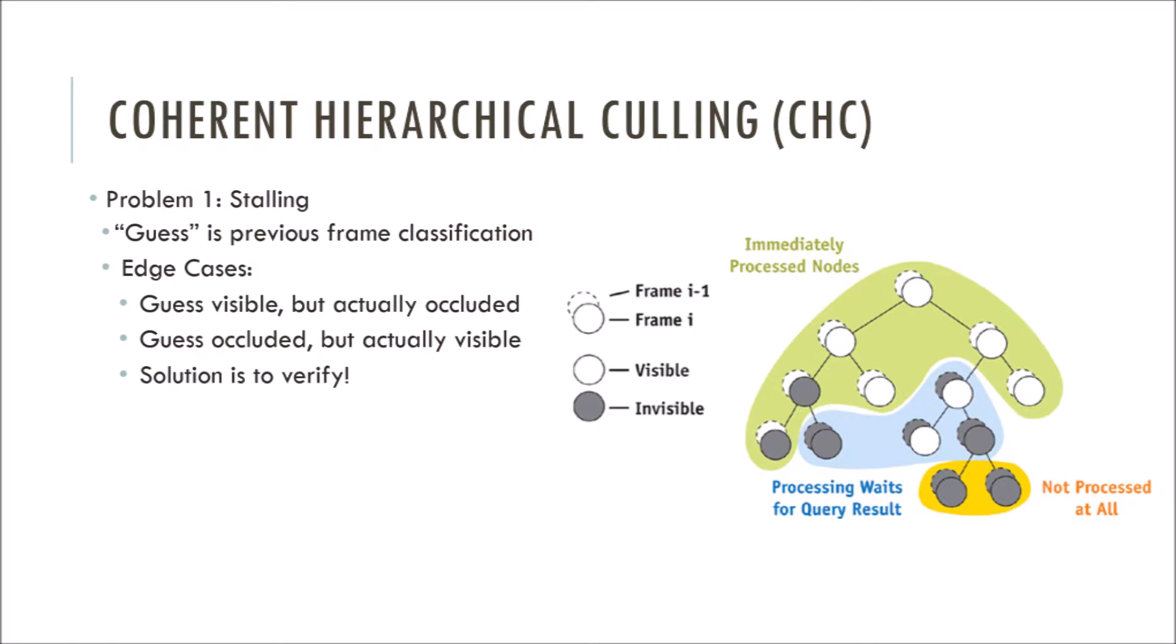There is, and it's called coherent hierarchical culling, or CHC for short. Instead of waiting for a result, this method guesses the outcome of a query by examining the previous frame. Objects tend not to move around too much from one frame to the next, so if we know what's visible and what's occluded in one frame, then it's very likely those same objects will be visible and occluded in the following frame. However, there are two edge cases where we can go wrong. So if we want to have correct images, we need to verify our guess and fix our assumption in case it was wrong. We do this whenever the query result arrives.